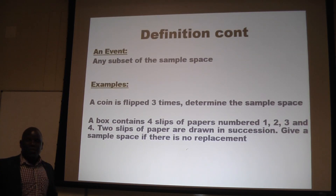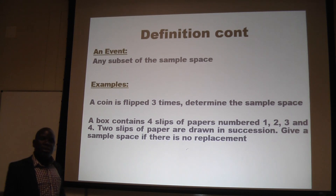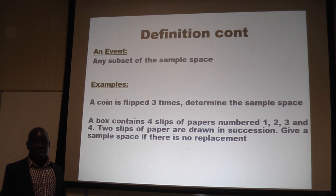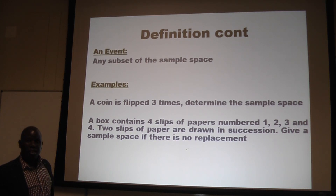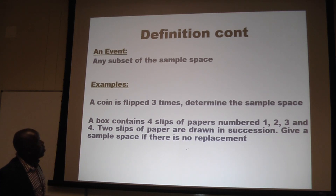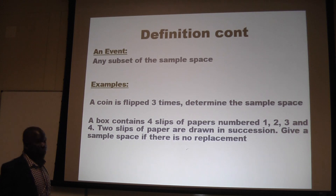An event is any subset of the sample space. From the work we are covering in basic mathematics, a sample space is a set with the special property that it contains all outcomes of an experiment. An event is a subset of a sample space — it contains certain elements. Recall the work we did when we were looking at the power set, which is simply a set that contains all the subsets of a set. So an event is a subset of the sample space.